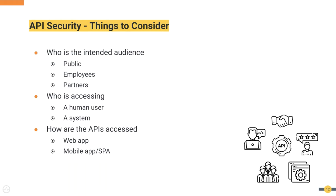Next, who is accessing the API? This can be a human user — where a user logs into the application and the application itself accesses the API on behalf of the user. Or it could be a system, where the user is irrelevant and the application accesses the API as a trusted subsystem.